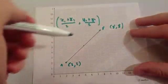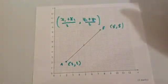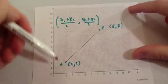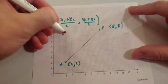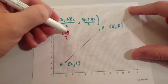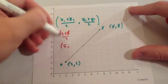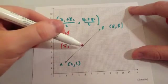And then you can add the x coordinates together and half it, and add the y coordinates together and half it. So x1 would be 2 plus x2, which is 8, and you just half it. So 2 plus 8 is 10, half it is 5. So it's going to be 5 across.